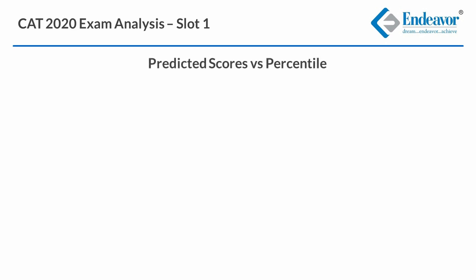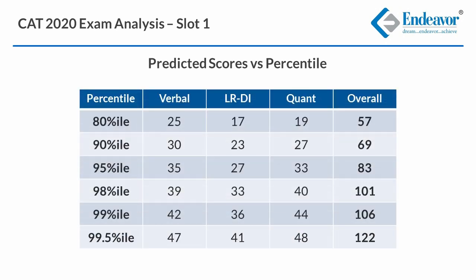Here are the predicted scores versus percentiles for slot 1. An overall score of 57 is expected to fetch an 80 percentile. An overall score of 69 is expected to fetch a 90 percentile. An overall score of 83 is expected to fetch a 95 percentile. An overall score of 101 is expected to fetch a 98 percentile. An overall score of 106 is expected to fetch a 99 percentile. An overall score of 122 is expected to fetch a 99.5 percentile.